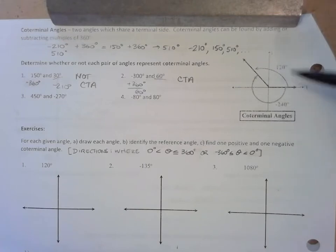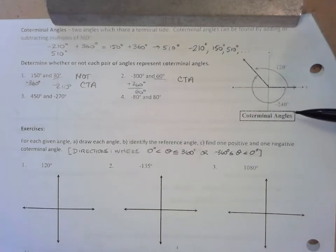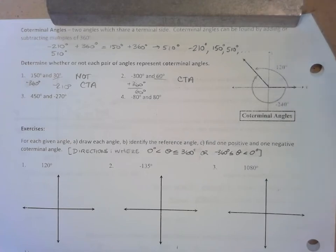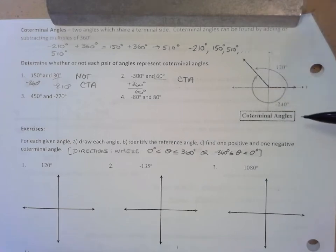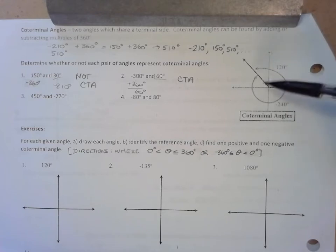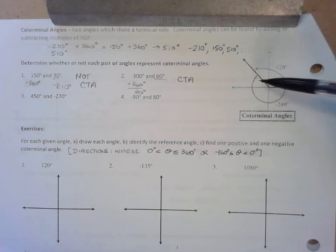The picture here gives you two angles: negative 240 and positive 120. These are coterminal angles. They share the same terminal side in quadrant 2, and they have the same reference angle of 60 degrees.